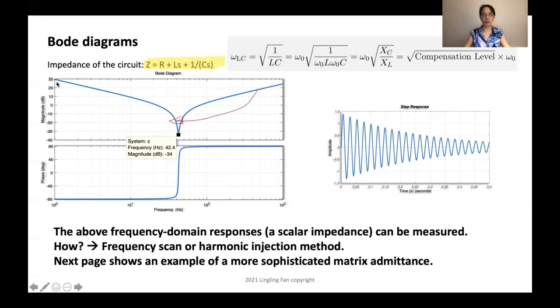So how can we show it in the impedance? We can plot impedance in frequency domain. You can see there's a dip at 42 hertz. So this 42 hertz, in fact, it actually matches this 40 hertz because it means this is very low. So any kind of voltage disturbance, you expect to have a big current at these frequencies. Therefore, we have this thing called sub-synchronous resonance in power grid or RLC resonance. So this impedance is what we want, the frequency domain response. And this is a scalar one. And it can be measured. So how? We can use frequency sweep or harmonic injection method.